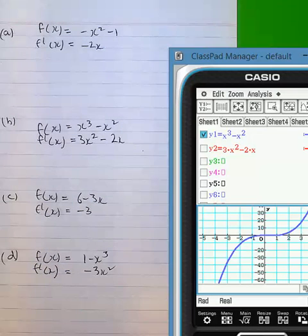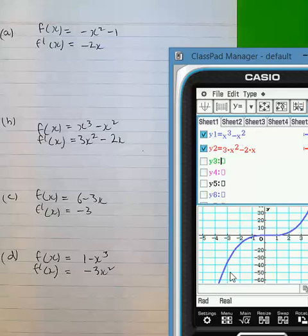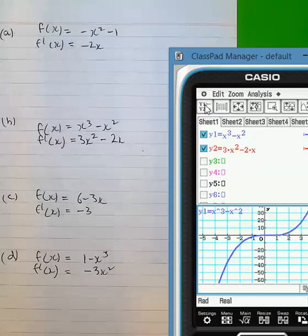In part B, x cubed minus x squared. If we select the gradient function to have a look at that - negative, I'm sorry, zero at one point. You can see the gradient function portrayed as such.